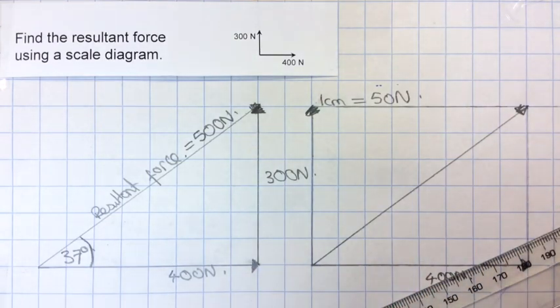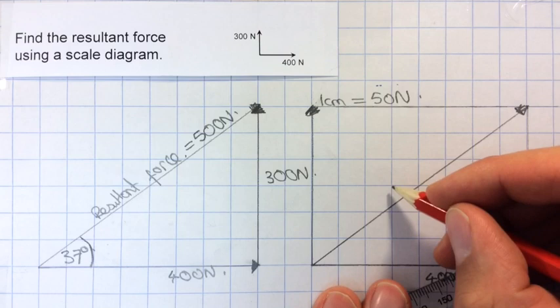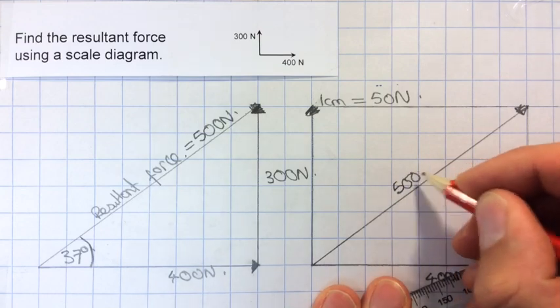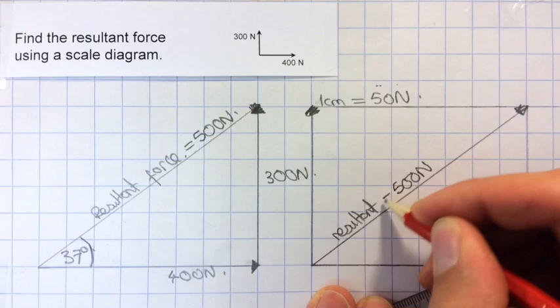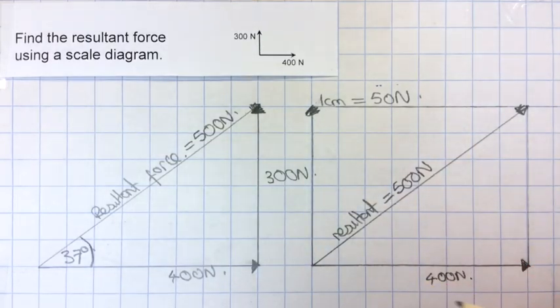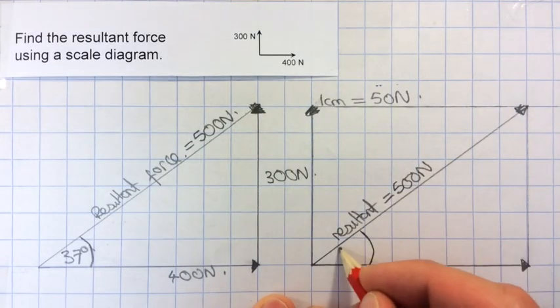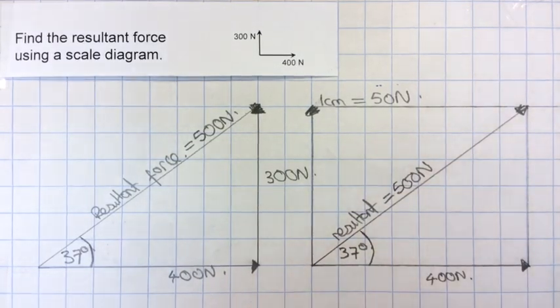And the same way as before, I could measure the length and find that as 10 centimetres, which would give me the resultant of 500 newtons. And I could measure the angle with the protractor, which would give me the 37 degrees again.